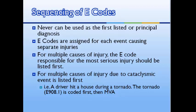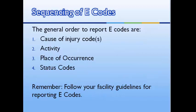There are guidelines for sequencing the E-codes. Most important, an E-code can never be used as the first listed code, but multiple E-codes may be assigned for multiple causes of injuries. In general, the order to report E-codes on a claim are cause of injury codes, activity, place of occurrence, and status codes. Remember, these are guidelines — follow your facility guidelines for reporting E-codes.